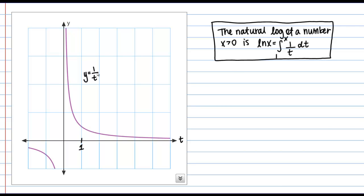My x value must be greater than 0, but besides that, it can be at any value along my t axis here. So let's put x here for now. Then the natural log of x is defined as the area of this shaded region under the curve, whatever that value may be.